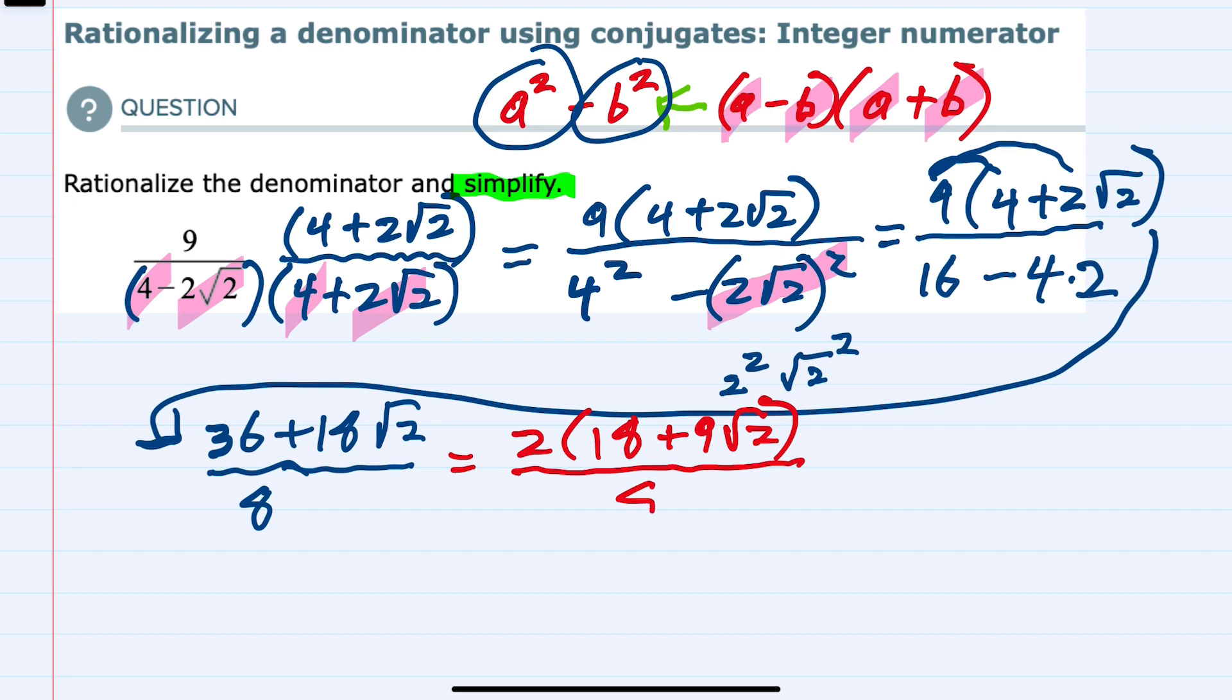And since I was able to factor out a 2, and I have an 8 in the denominator, I can now cancel. Both the 2 and the 8 are divisible by 2. So this would simplify, 2 goes into 2 once,